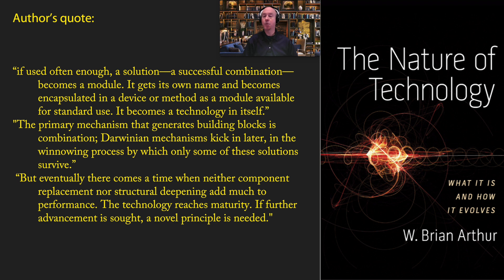Getting back to the author's quote: 'The primary mechanism that generates building blocks is combination. Darwinian mechanisms kick in later in the winnowing process by which only some solutions survive. But eventually, there comes a time when neither component replacement nor structural deepening add much to performance. The technology reaches maturity. If further advancement is sought, a novel principle is needed.' That's true, but I would add that new technological innovations — for example, the internet or cell phones — can dramatically impact and change old technologies. A technology reaches maturity given the known technology, but a new innovation can spark a new burst of technological change.